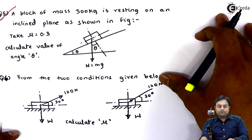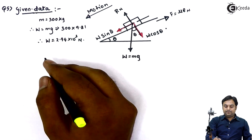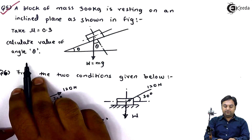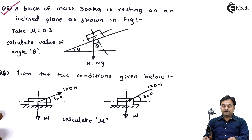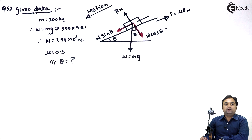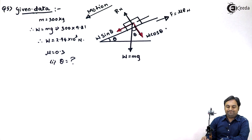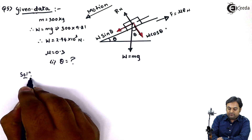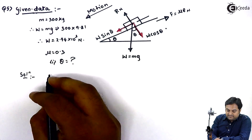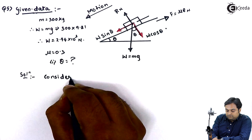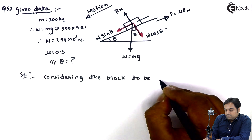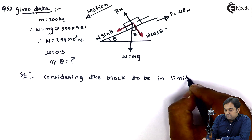Next let us see what we have to calculate here. Take mu equal to 0.3, calculate value of angle theta. Here we have to find out what this theta is. This is the question in which they are telling us to calculate the angle of this inclined plane. Considering the block to be in limiting equilibrium, I will write the solution.